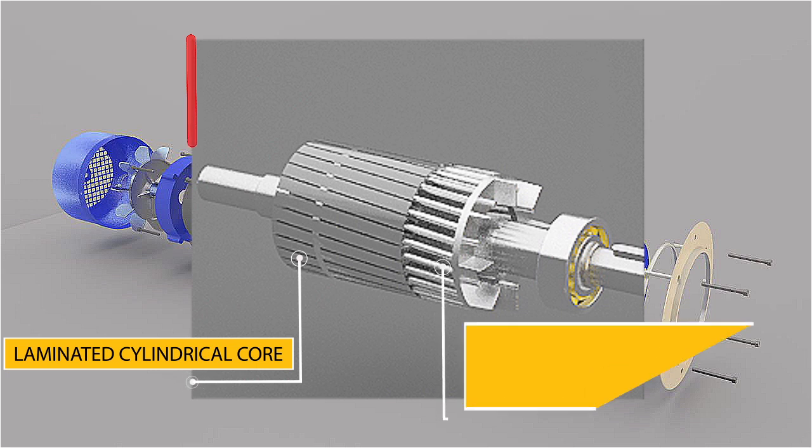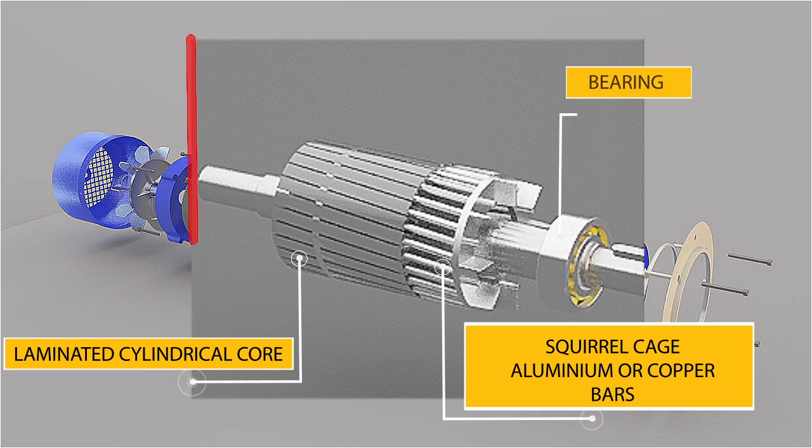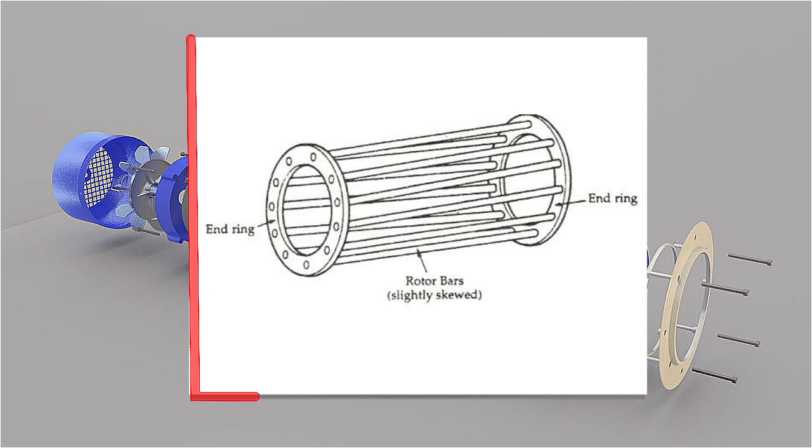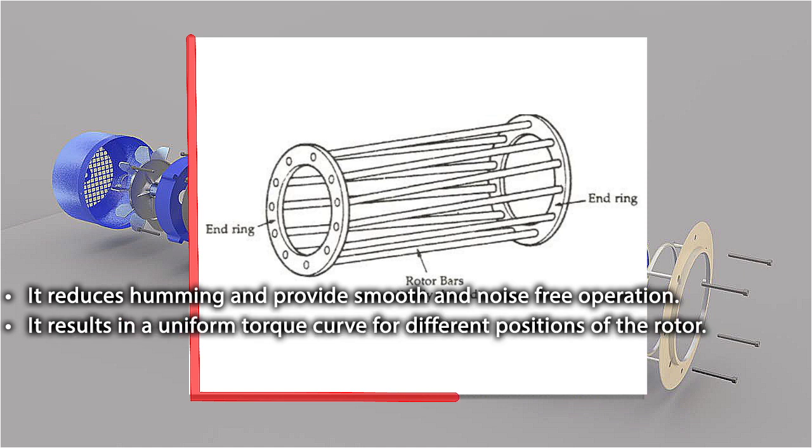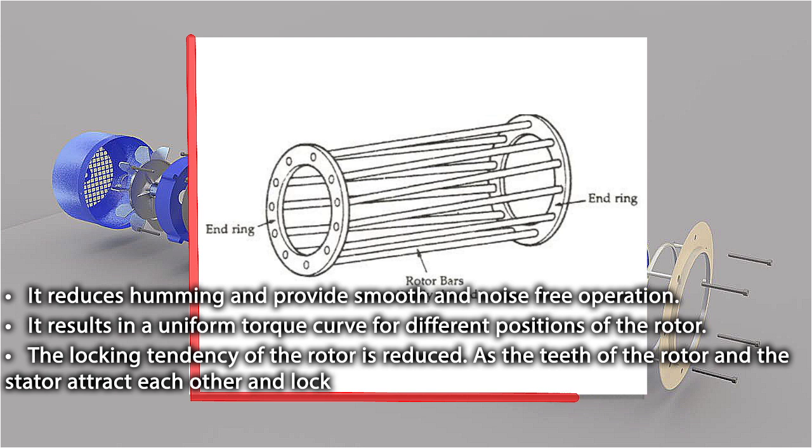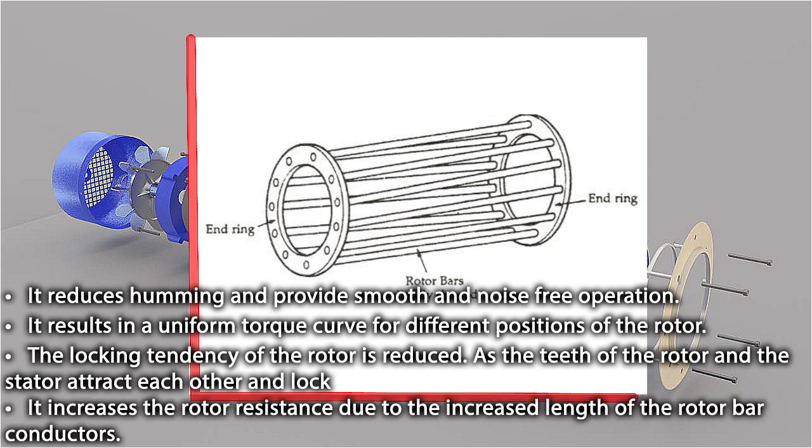A squirrel cage rotor consists of a laminated cylindrical core. The circular slots at the outer periphery are similarly closed. Each slot contains uninsulated bar conductors of aluminum or copper. At the end of the rotor, the conductors are short circuited by a heavy ring of copper or aluminum. The rotor slots are usually not parallel to the shaft but are skewed. The skewing of the rotor conductors has the following advantages: It reduces humming and provides smooth and noise free operation. It results in a uniform torque curve for different positions of the rotor. The locking tendency of the rotor is reduced, as the teeth of the rotor and the stator attract each other and lock. It increases the rotor resistance due to the increased length of the rotor bar conductors.